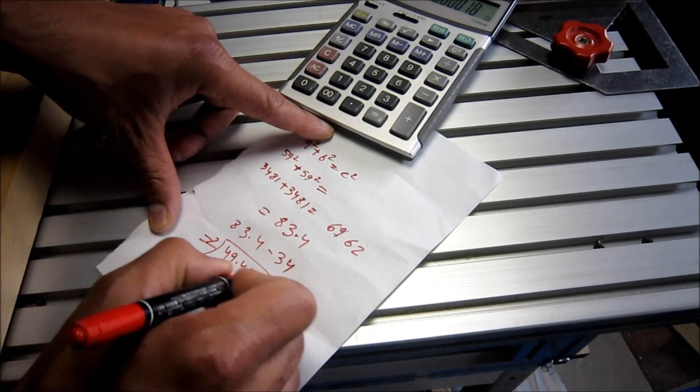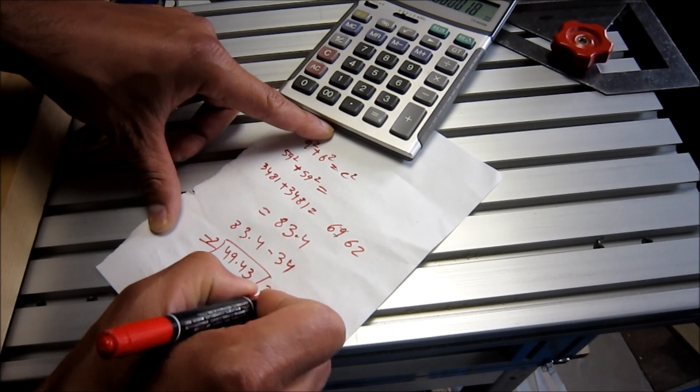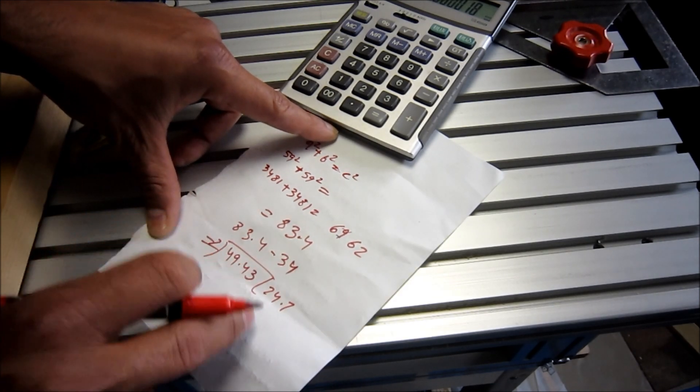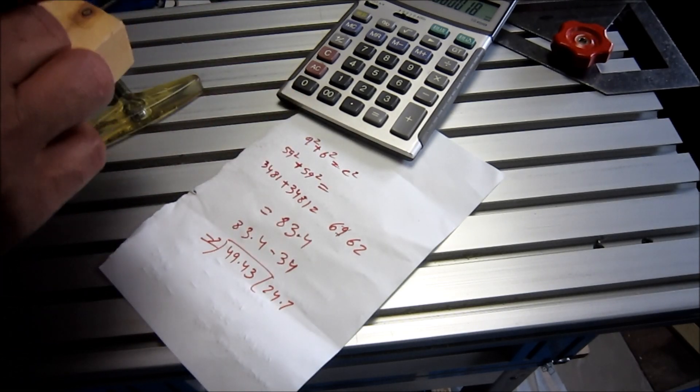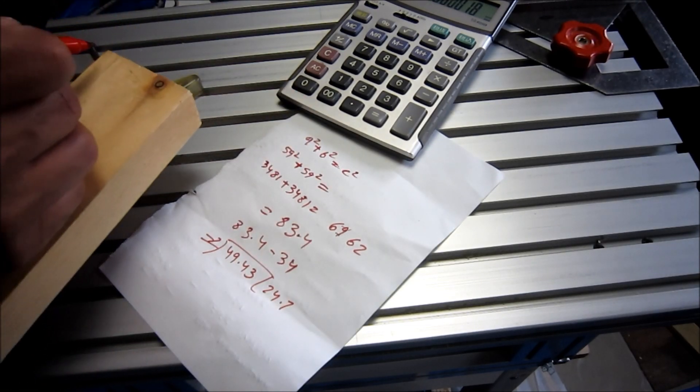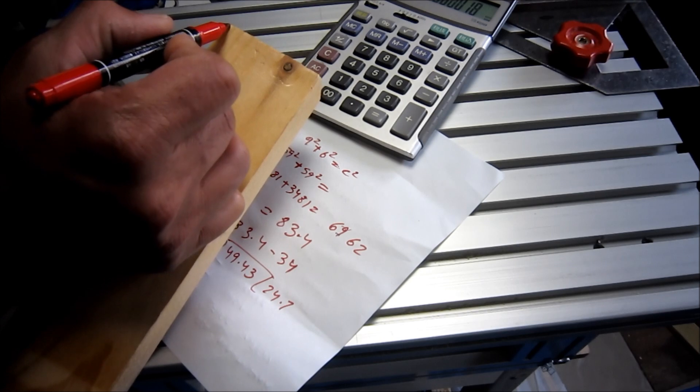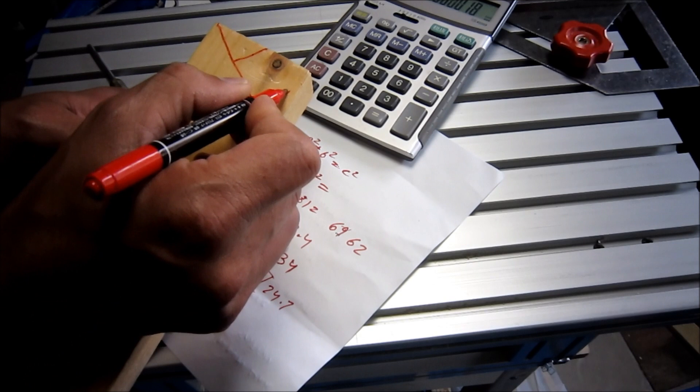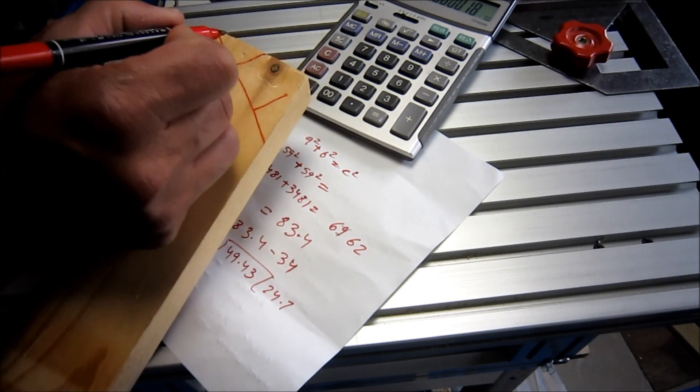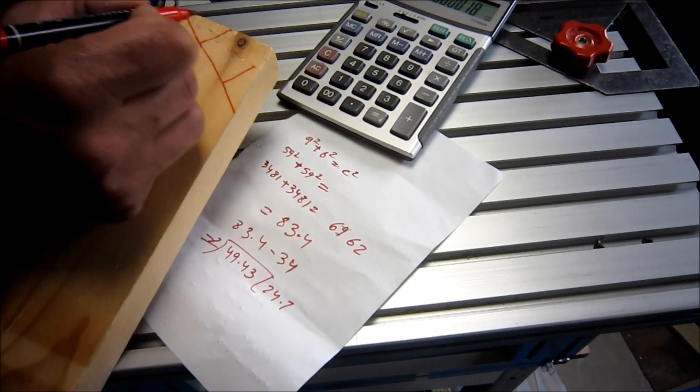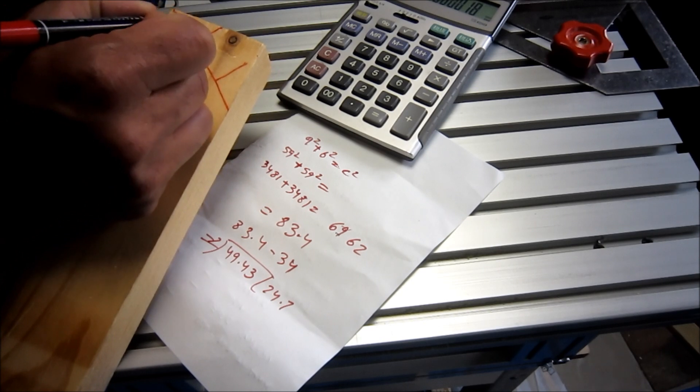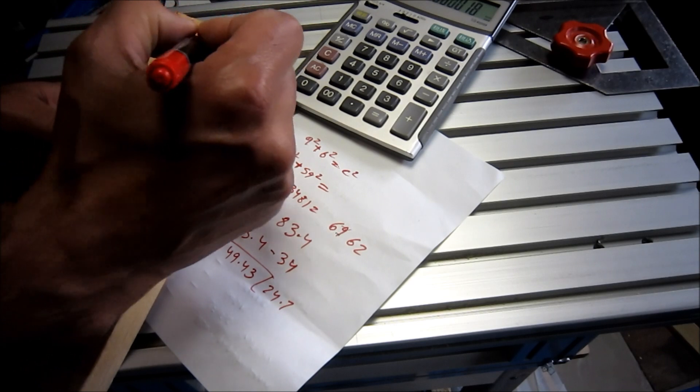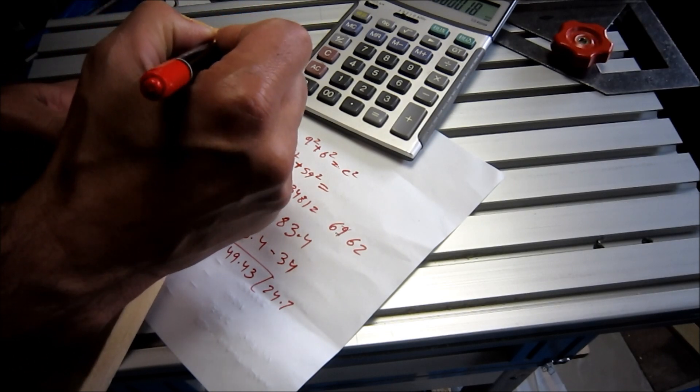And then divided by 2, it's around 24.7. So this should come over the shoulder, like this way. This length should be 24.7, and this should also be 24.7, and this length also should be 24.7.